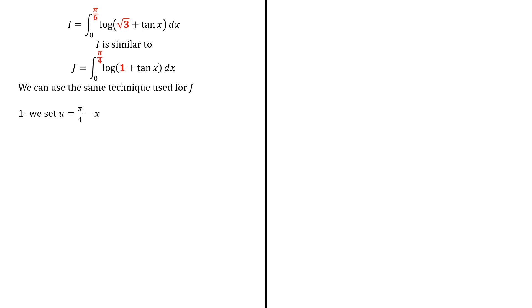So what we do, we perform a simple substitution. We set u equals the upper limit, here pi over 4 minus x. And then we have a linear equation in j involving this integral, which is straightforward to compute.